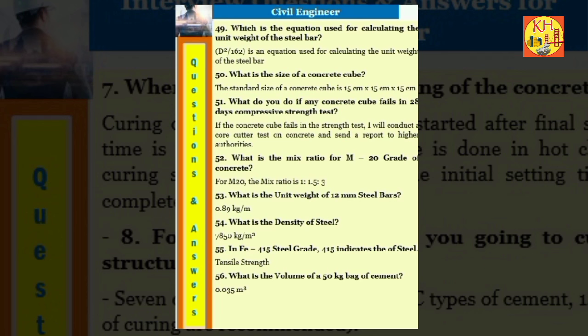Question 51: What do you do if any concrete cube fails in 28 days compressive strength test? If the concrete cube fails in the strength test, I will conduct a core cutter test on concrete and send a report to higher authorities. Question 52: What is the mix ratio for M20 grade of concrete? For M20 the mix ratio is 1:1.5:3. Question 53: What is the unit weight of 12 millimeters steel bars? 0.89 kilograms per meter. Question 54: What is the density of steel? 7,850 kilograms per cubic meter. Question 55: In Fe 415 steel grade, 415 indicates the tensile strength of steel. Question 56: What is the volume of a 50 kilograms bag of cement? 0.035 cubic meters.